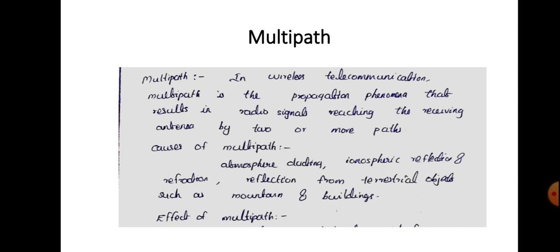The causes of multipath include atmospheric ducting, ionospheric reflection and refraction, and reflection from terrestrial objects such as mountains and buildings. These things may appear between transmitter and receiver causing multipath. There may also be different layers in the atmosphere, so ionospheric reflection and refraction may also cause multipath.